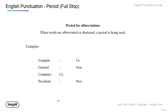Another way we can use periods is for abbreviated or contracted words — shortened words. You take the abbreviated part and put the period afterwards. For example: 'eg.' for example, 'gen.' for general, 'co.' for company, 'pres.' for president.